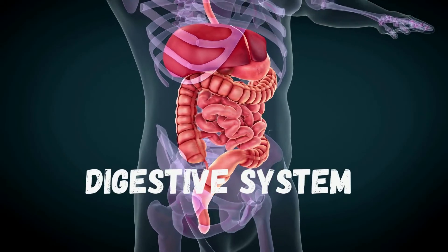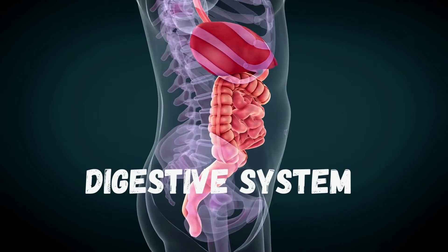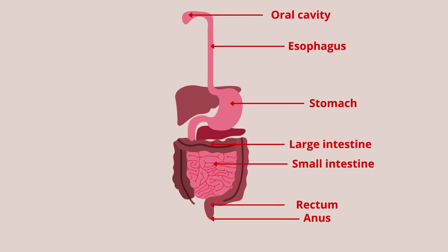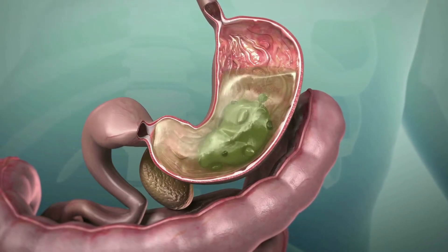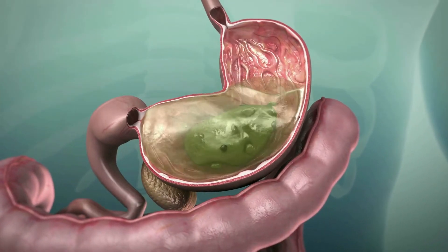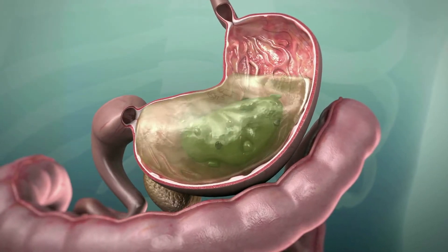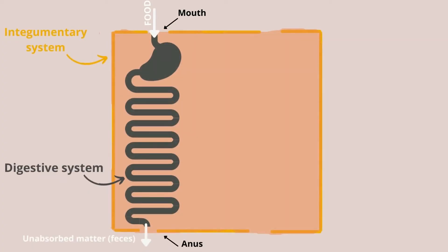Next we have the digestive system, which will be the next system we will be using in the example. This system is composed of the oral cavity, esophagus, stomach, small and large intestines, rectum, and anus. This system breaks down the food that we eat, allowing the absorption of nutrients into the blood. It also eliminates the indigestible material. We will represent this system as a tube — actually in reality it is a long twisting tube. It starts at the oral cavity or the mouth and ends at the anus.